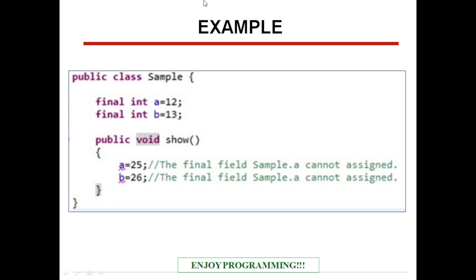For example here, we have created two variables of integer type and we have declared both the variables as final. A is equal to 12, b is equal to 13.